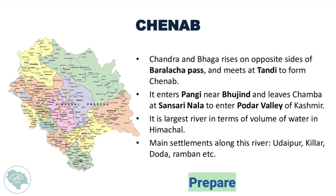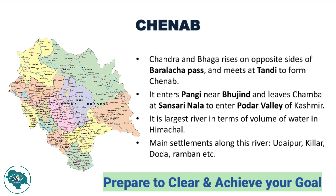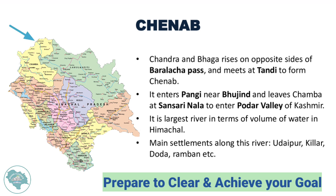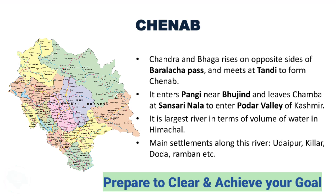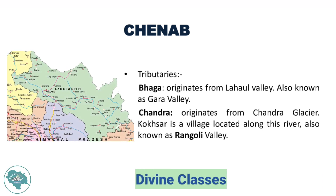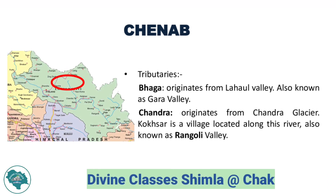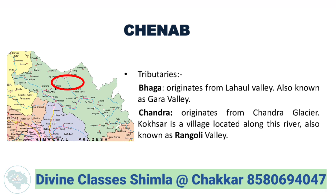Chenab is a confluence of Chandra and Bhaga rivers, which rise on opposite sides of Bara Lacha, and meet at Tandi to form Chenab. It enters Pangi near Bhujind and leaves Chamba at Sansari Nala to enter the Pada Valley of Kashmir. It is the largest river in Himachal in terms of volume of water. Main settlements include Udaipur, Kilar, Dodar, and Ramban. Main tributaries are Bhaga, originating from the Lahaul Valley (also called Gara Valley), and Chandra, originating from Chandra Glacier. Kokhsar village lies along this river, also known as Rangoli Valley.